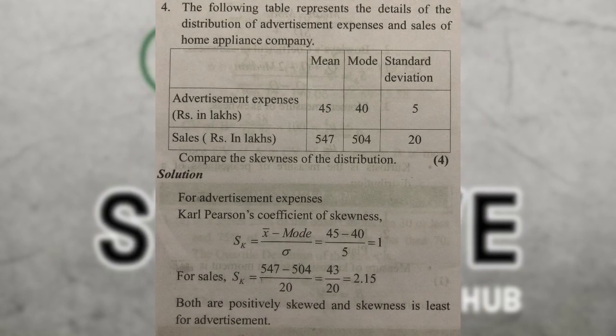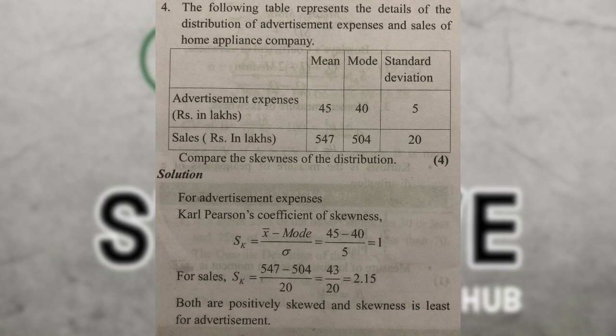The following table represents the details of the distribution of advertisement expense and sales of a home appliance company. Add advertisement expense and sales corresponding to mean minus mode divided by SD. The SK value for advertisement and SK value for sales are computed. SK is least for advertisement expense.